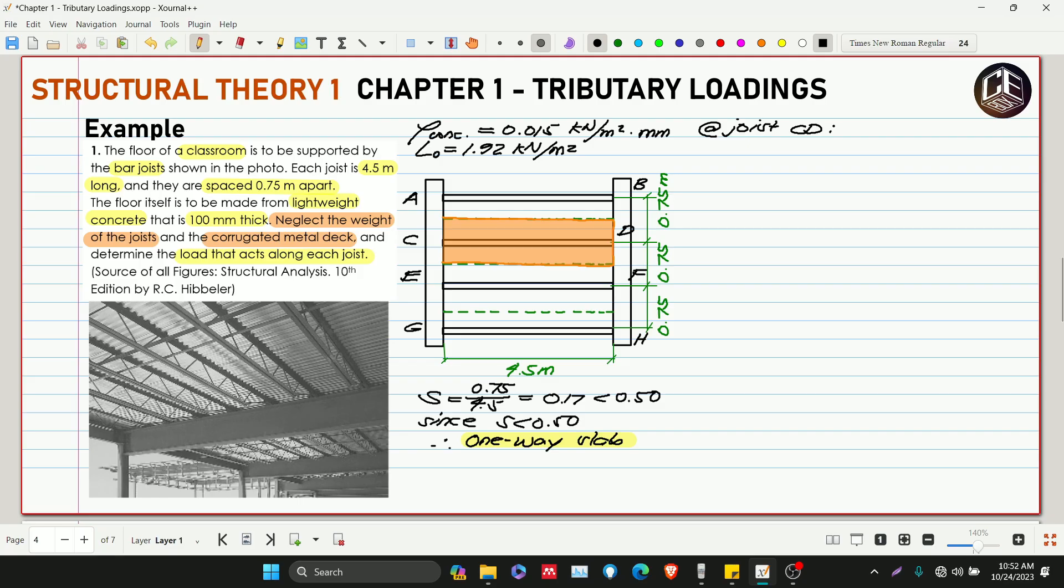At joist CD, since these joists are steel, let's assume the connection to the girder is simple support. This is C and this is D, and the length is 4.5 meters. These are the loadings we want to find. What is the loading that will be carried by these members? It starts here.